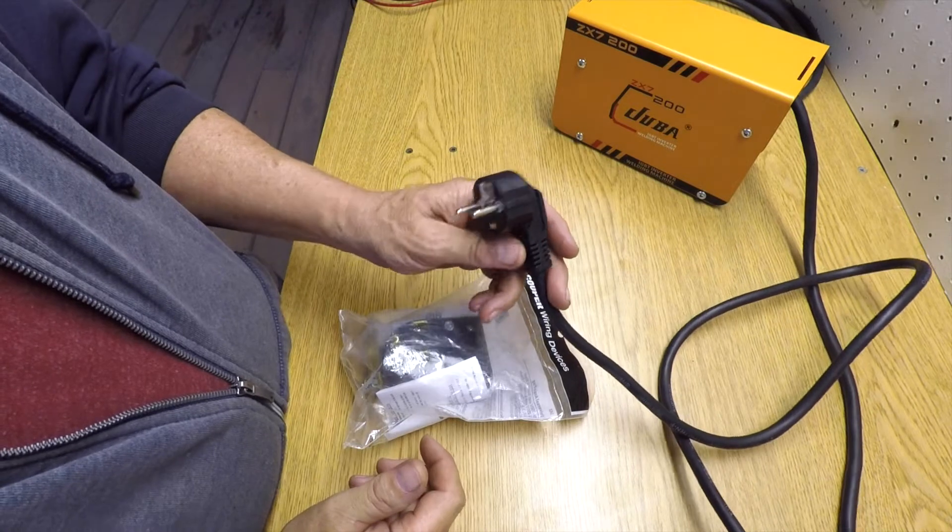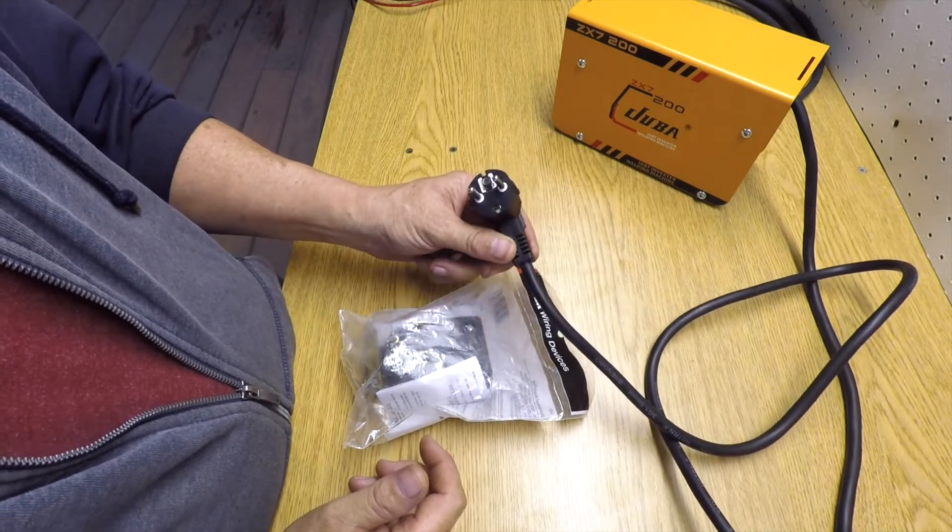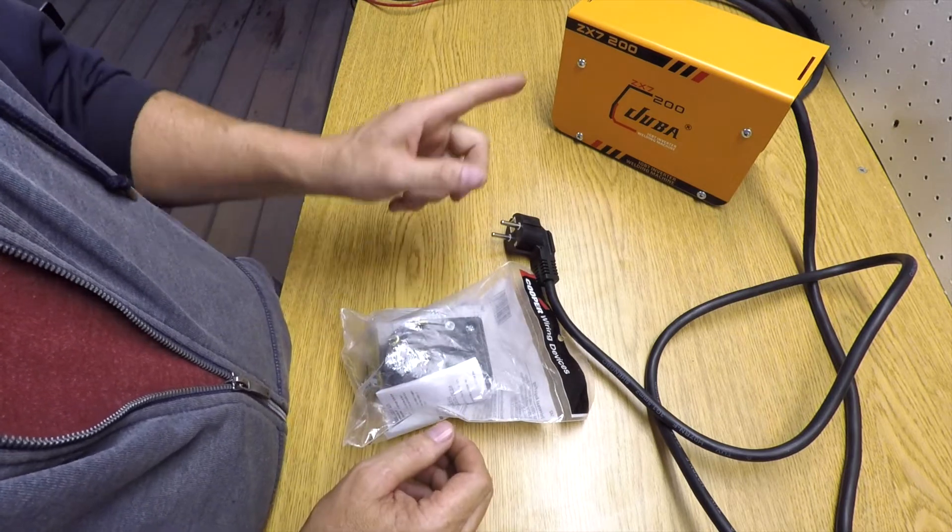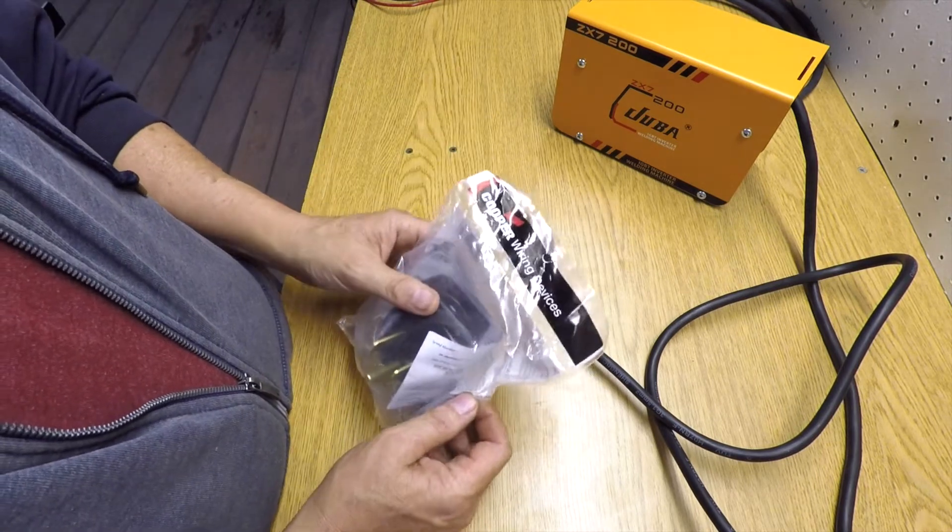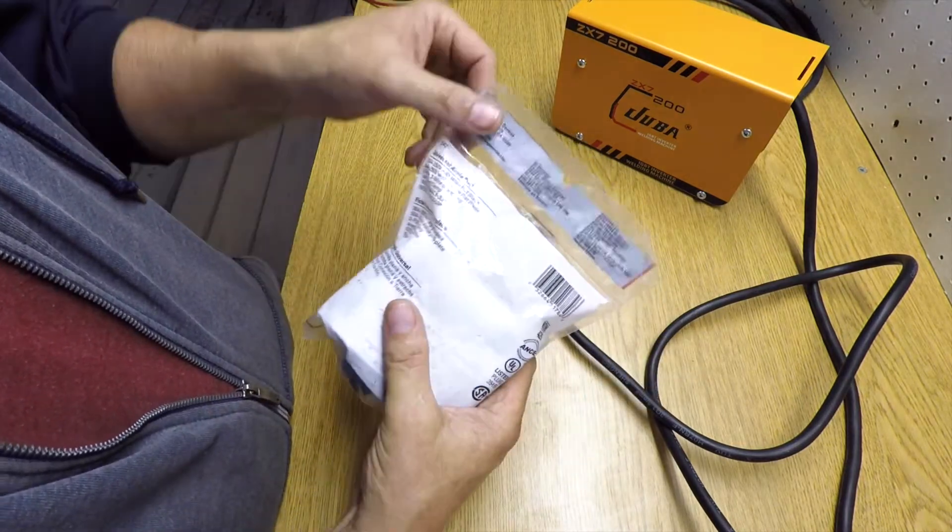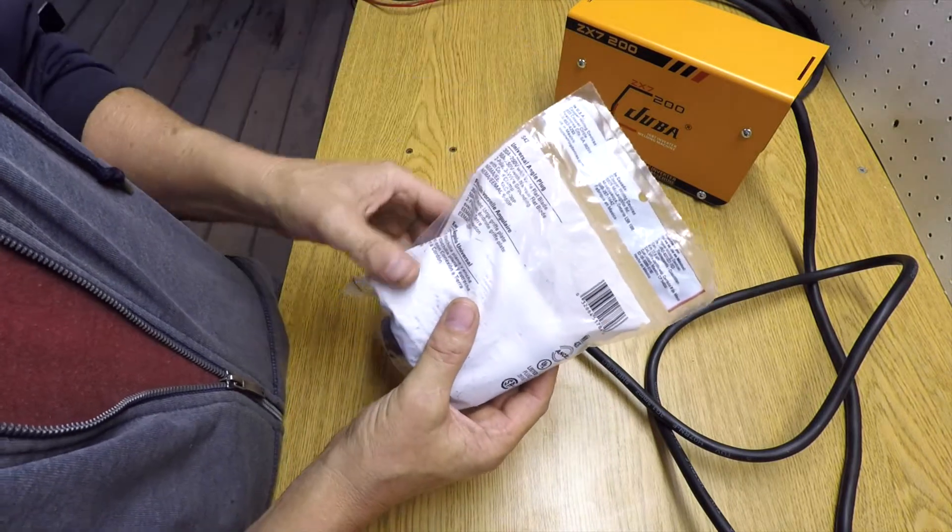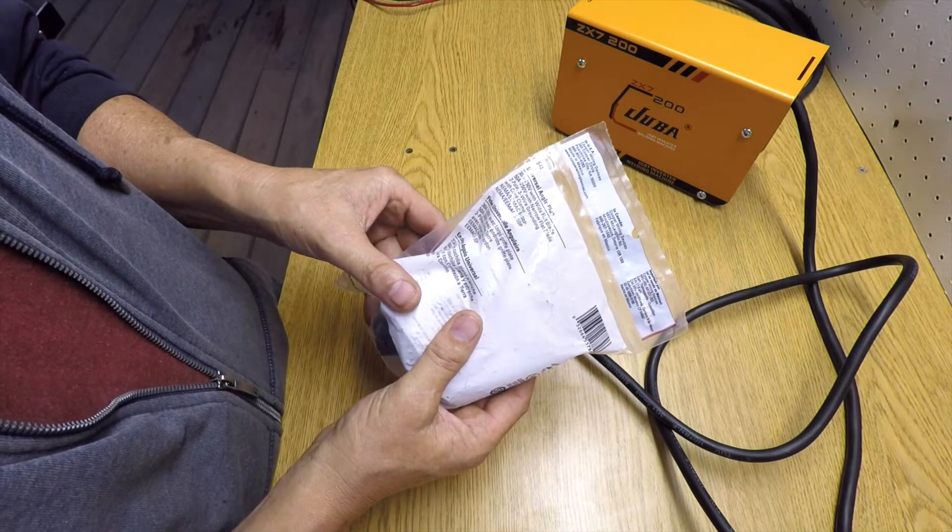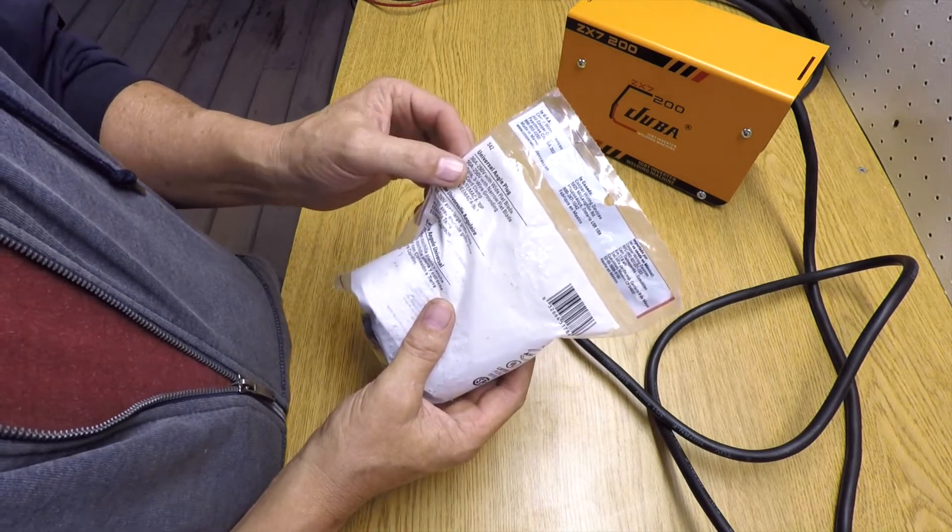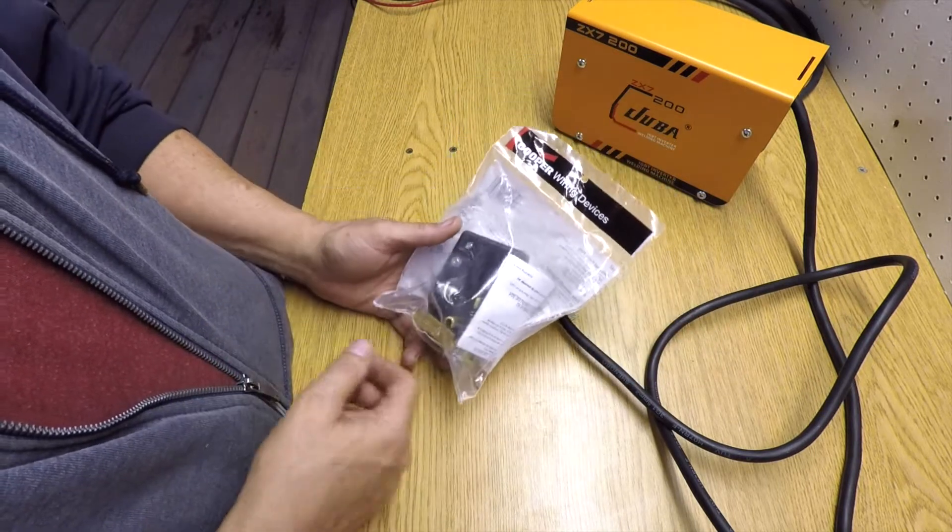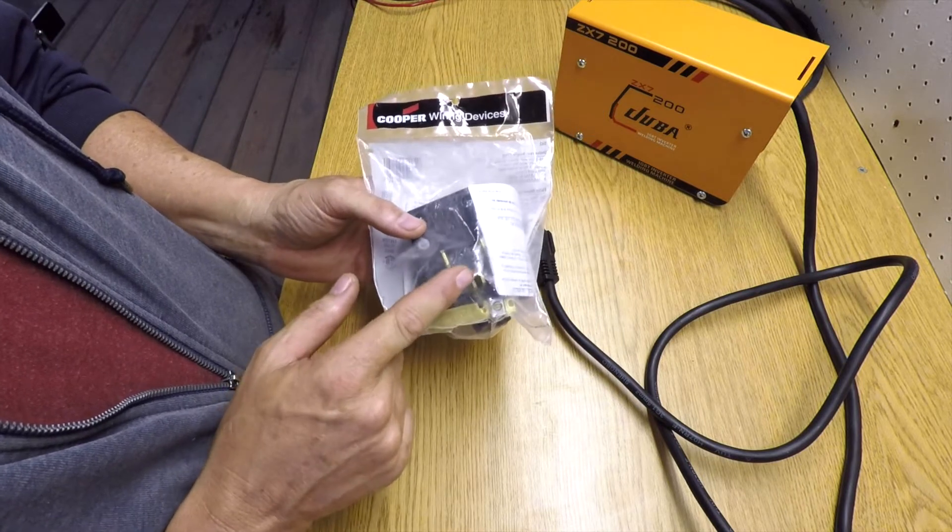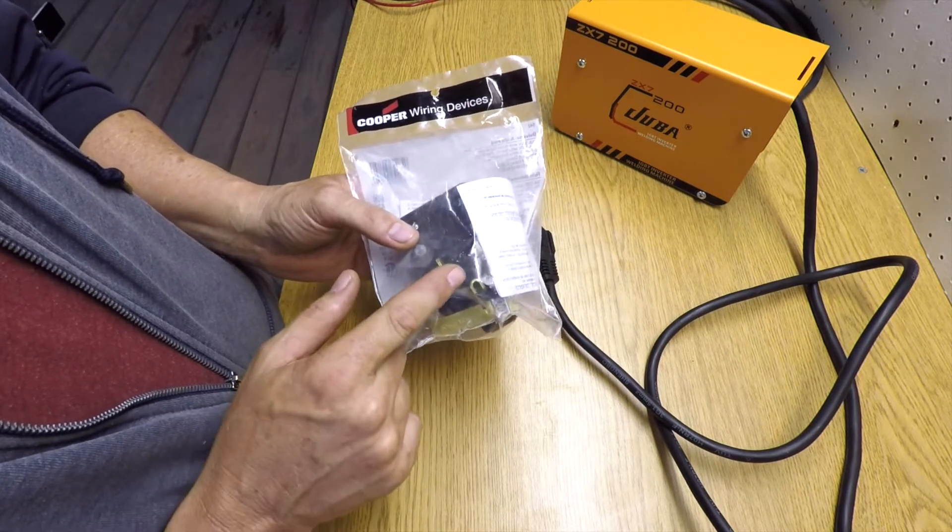I'm going to change out this European plug. I bought this Cooper wiring devices model S42, a 50 amp, 250 volt plug end. Way overkill for this little machine, but most welders that are 240 volt come with a plug of this layout.